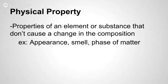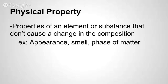Physical properties are properties of an element or substance that don't cause a change in the composition, or don't cause a change in the way it looks. For example, appearances such as what color it is, the smell, or even the phase of matter — whether it's a solid, liquid, or gas — are all physical properties of a substance. They don't change its composition in any way, shape, or form.